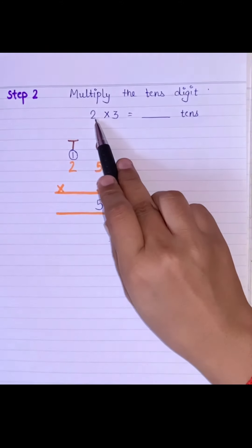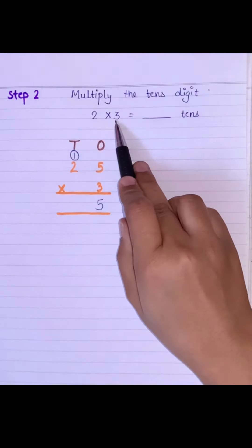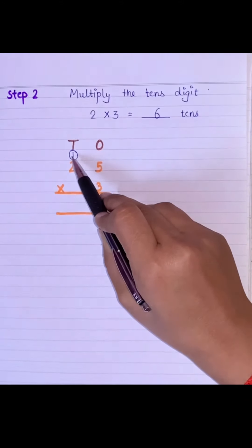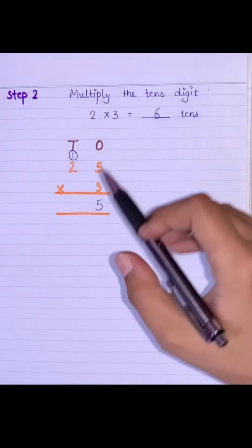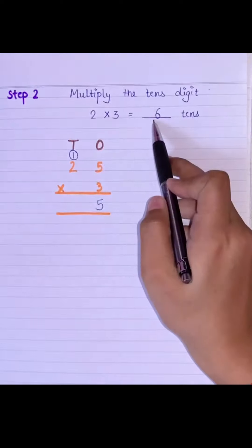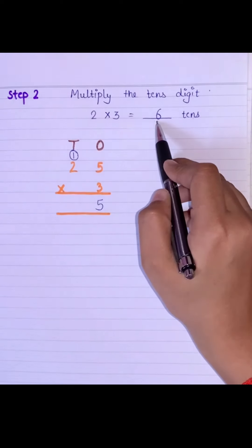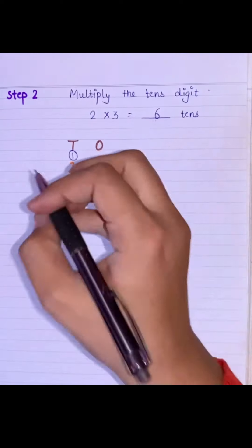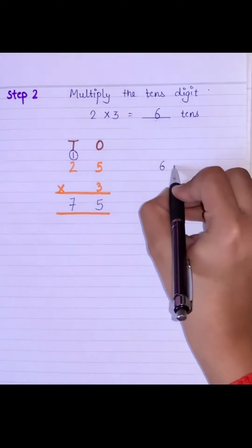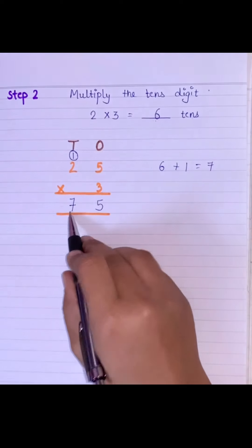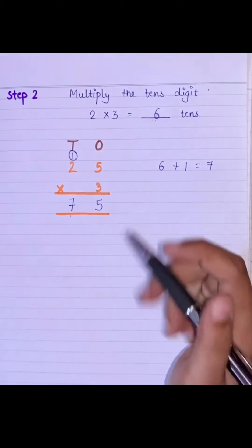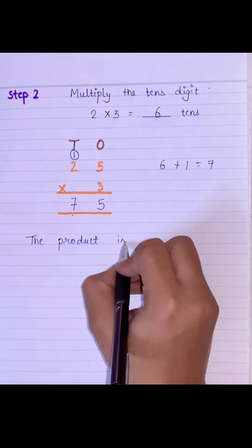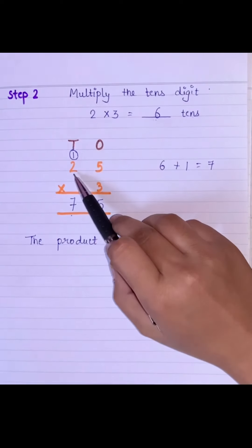Now the second step will be to multiply the tens digit. Under the tens digit we have 2, so we will multiply 2 with 3 to get 6 tens. But we have the 1 that we carried over, so we add: 2 into 3 is 6, and 6 plus 1 will be 7. So we write this 7 under the tens place. The product is 75.